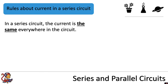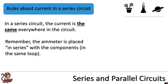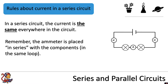In a series circuit the current is the same everywhere in the circuit. The ammeter is placed in series with the components in the same loop, and the ammeter is what we use to measure current. In this series circuit with two lamps, I've put three ammeters in to show that the current is the same everywhere. So if we measured 2 amps here, the rule says it's the same everywhere — we would also get 2 amps here and 2 amps over here.